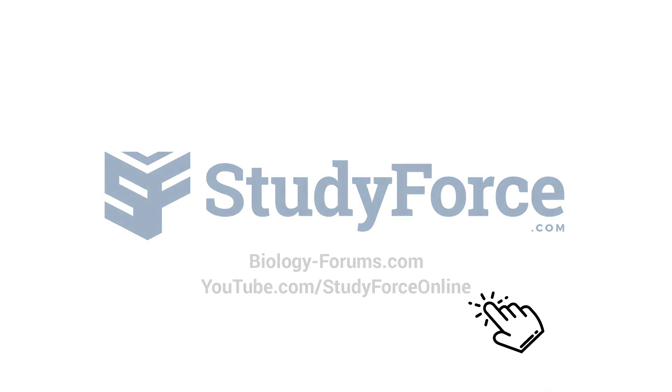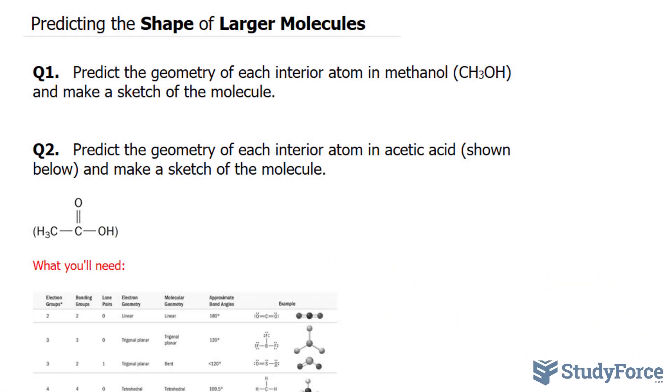In this lesson, I'll show you two examples on how to predict the shape of larger molecules. The molecules we're focusing on in this video are methanol and acetic acid.